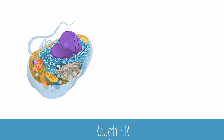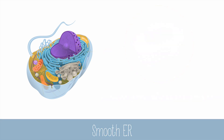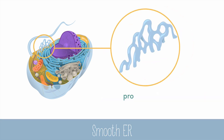The endoplasmic reticulum is a transportation highway, which has two parts: rough and smooth. The rough ER produces phospholipids and proteins, and is covered in ribosomes. The smooth ER produces lipids, such as cholesterol. You can tell it apart from the rough ER because it has no ribosomes on it, and it's more tubular than flat.